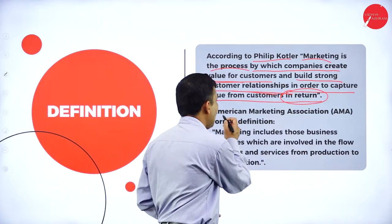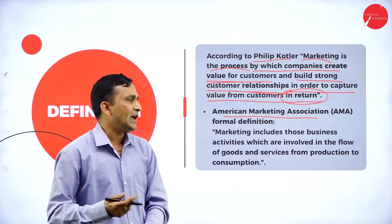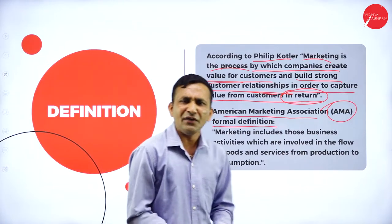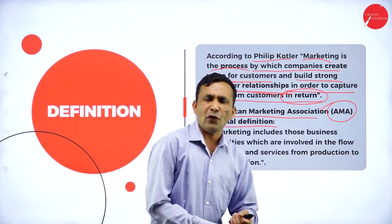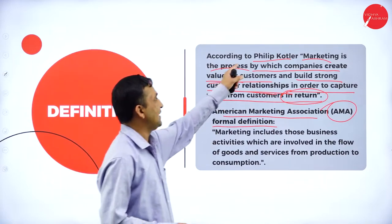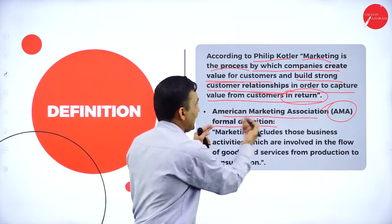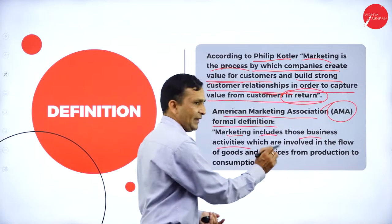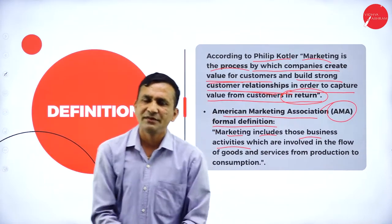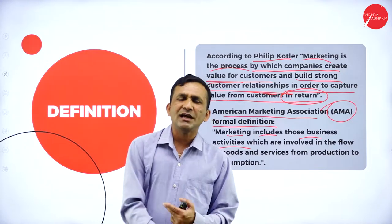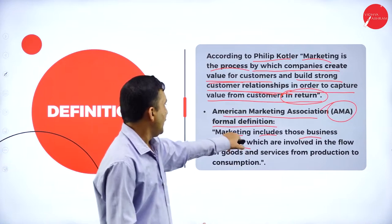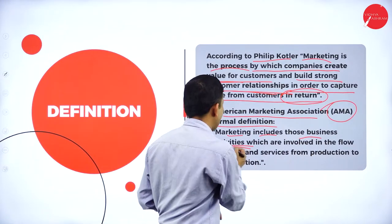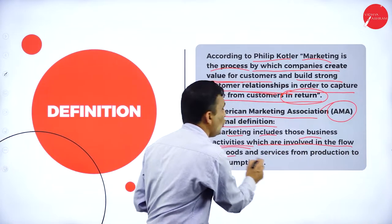There is one standard definition from the American Marketing Association (AMA). Marketing includes those business activities — because business activities start from human activity. Men or women take steps to produce the product, which comes under human activity. Marketing includes those business activities which are involved in the flow of goods and services.